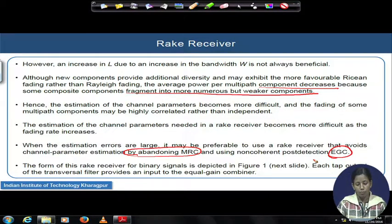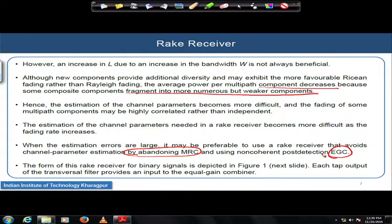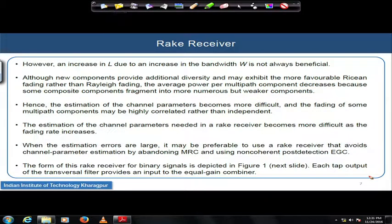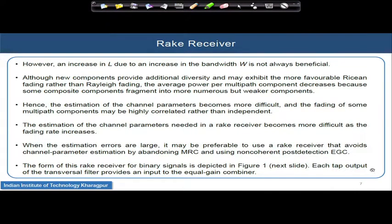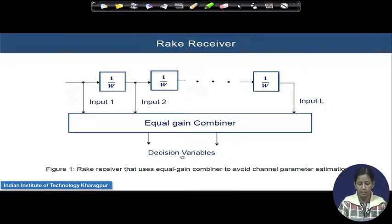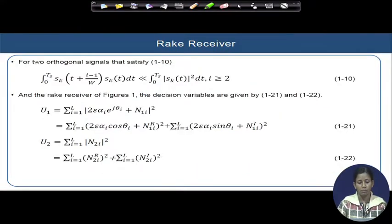To handle such cases, we can replace the earlier receiver architecture with an equal gain combiner structure, where all tap outputs are combined using equal gain and then fed into the decision variable block that decides about the transmitted symbol.